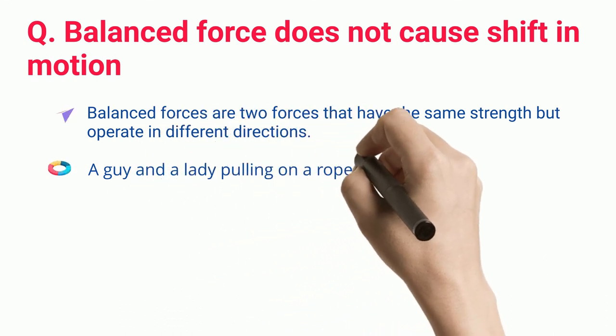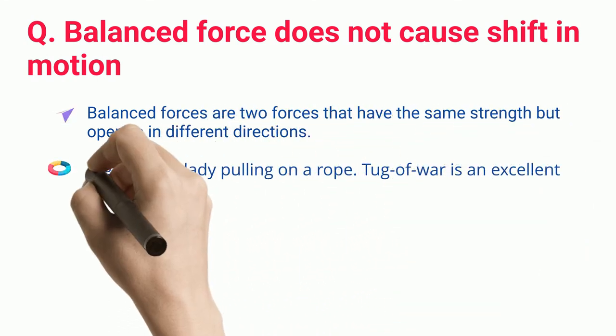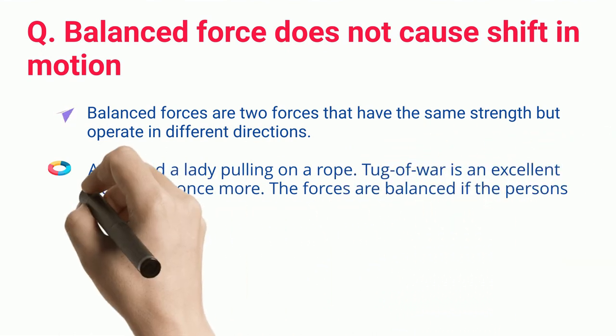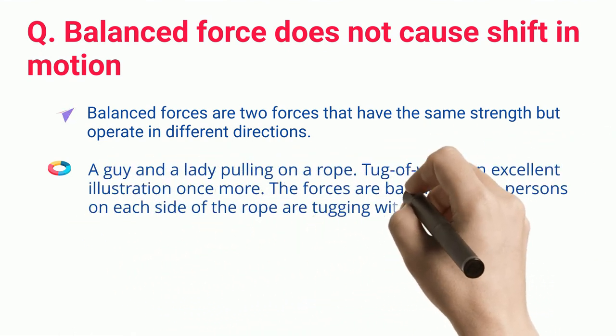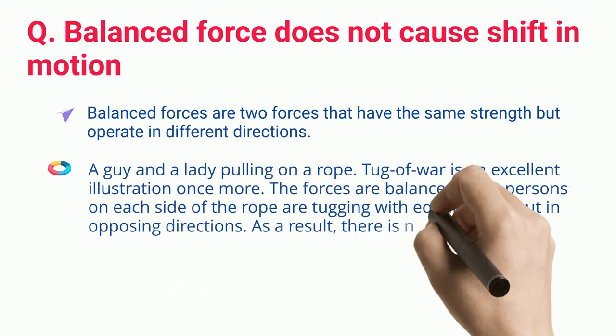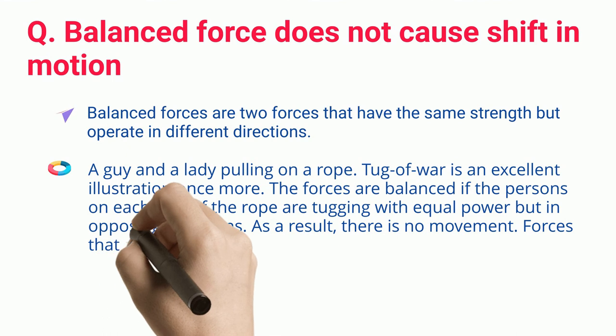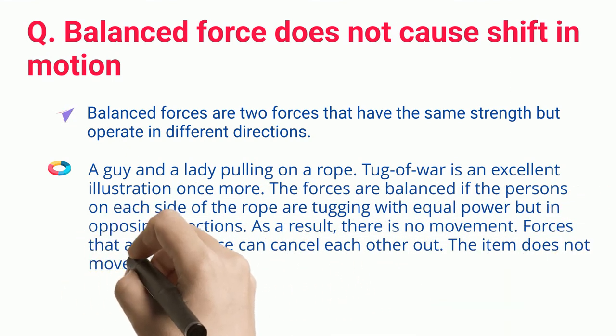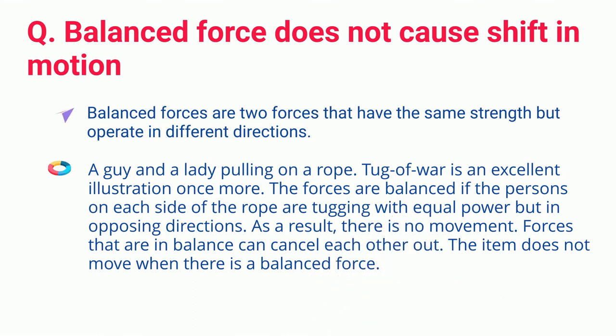A guy and a lady pulling on a rope. Tug-of-war is an excellent illustration once more. The forces are balanced if the persons on each side of the rope are tugging with equal power but in opposing directions. As a result, there is no movement. Forces that are in balance can cancel each other out. The item does not move when there is a balanced force.